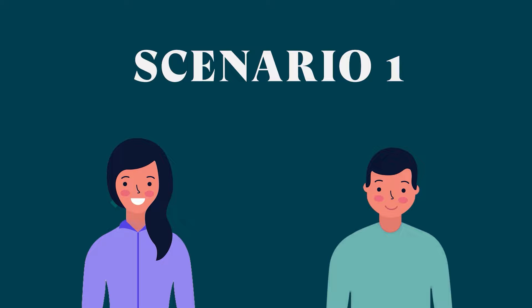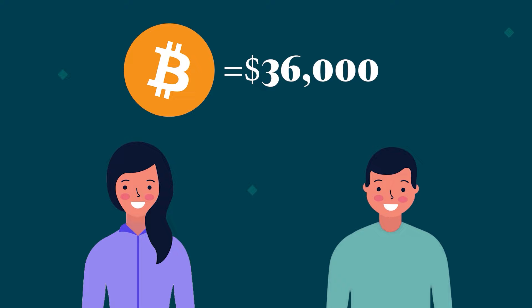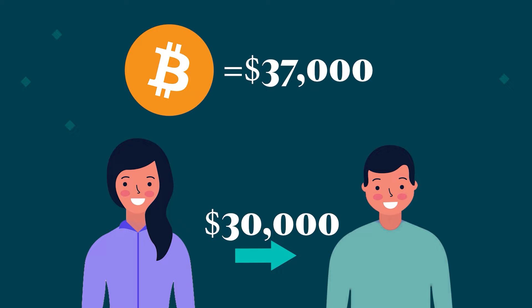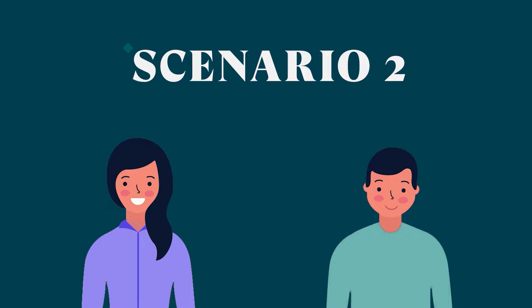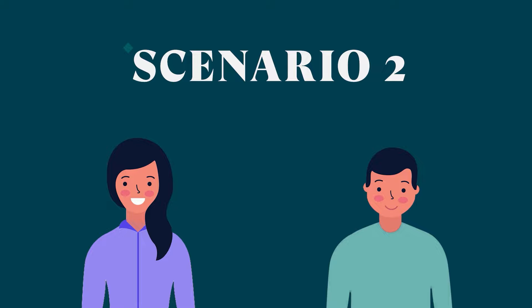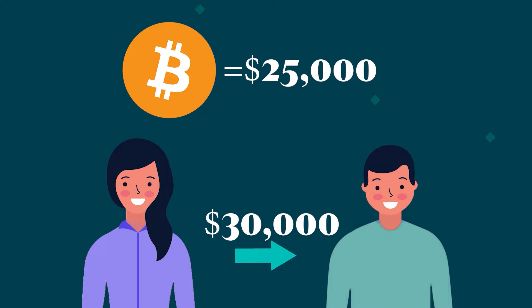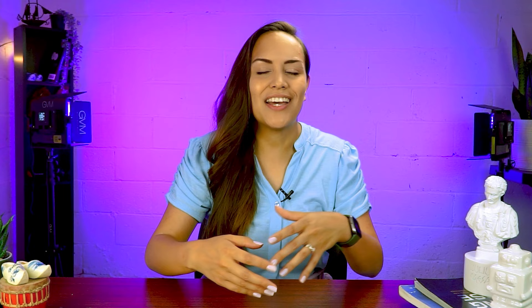Let's look at different scenarios that will determine which of the two makes a profit. Scenario one: Mercy was right and the price of Bitcoin goes up to $37,000. She'll actually be purchasing Bitcoin from Frank at a discount, making a profit of $7,000, not factoring in fees. Scenario two: Mercy's prediction was wrong and the price of Bitcoin went down to $25,000. She'll still have to buy the Bitcoin from Frank at the agreed $30,000, meaning she makes a $5,000 loss, while Frank makes a $5,000 profit.